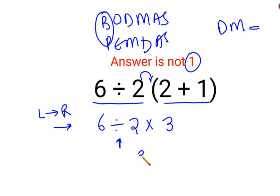So 6 divided by 2 is 3 multiplied by 3. So answer for this question is supposed to be just 9. I hope this is very very clear to everyone.